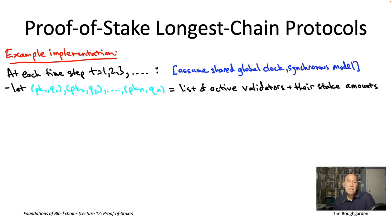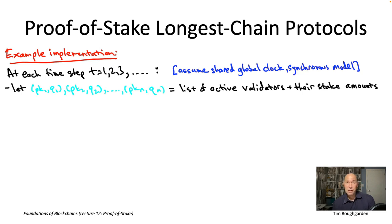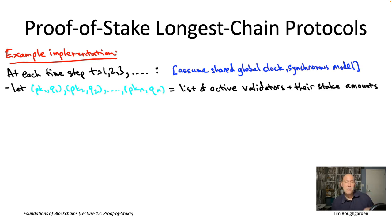When we talked about BFT-type protocols, we started with the special case where all stakes were the same. Here, let's just jump in and allow arbitrary stake amounts from the get-go. So there are N public keys in the staking contract, PK1 up to PKN — some of those public keys might be owned by the same person. To each of those N public keys, there's some arbitrary associated stake amount, the Q sub i's.